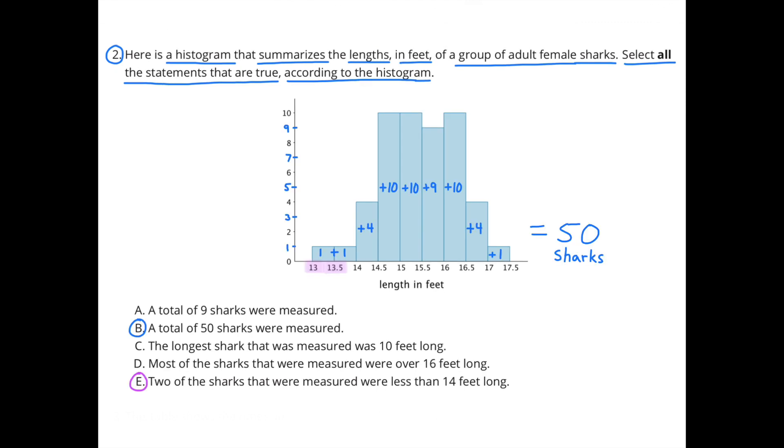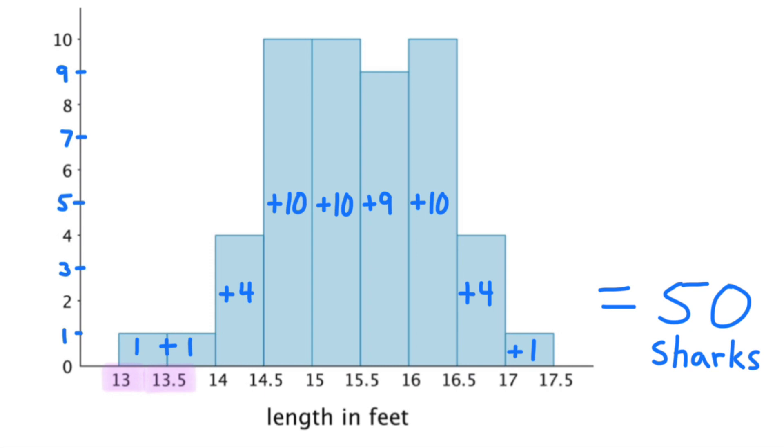The statements that I discovered are true are B and E. B, a total of 50 sharks were measured. Use the vertical axis on the left to help you count the number of sharks that were measured. 1 plus 1 plus 4 plus 10 plus 10 plus 10 plus 9 plus 10 plus 4 plus 1 equals a total of 50 sharks.